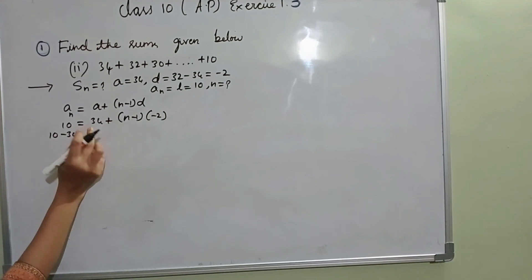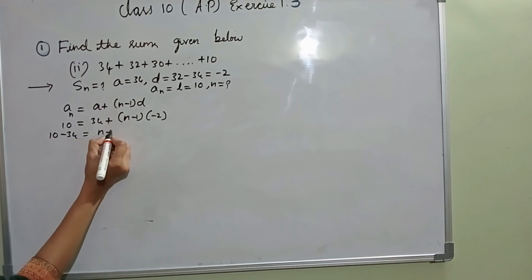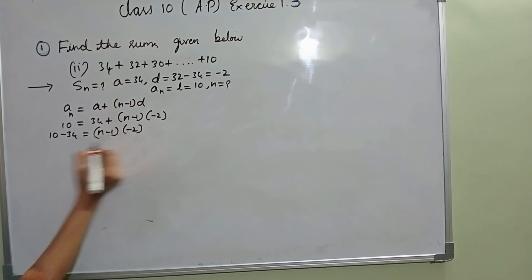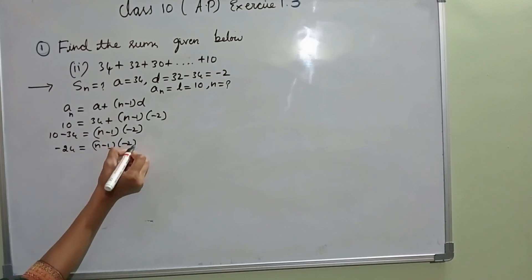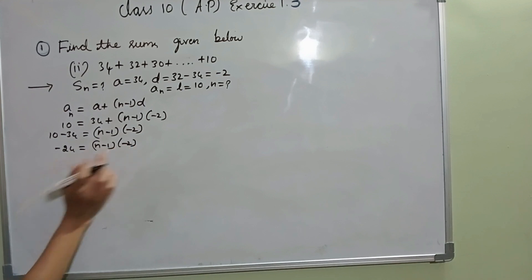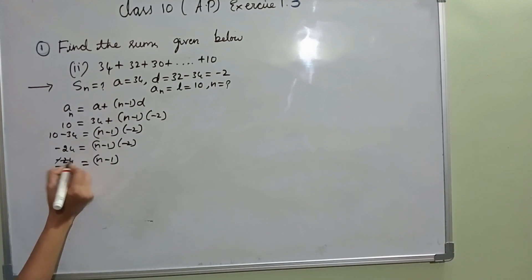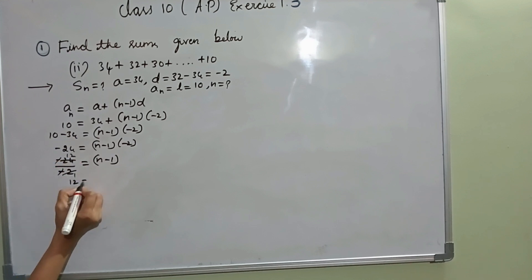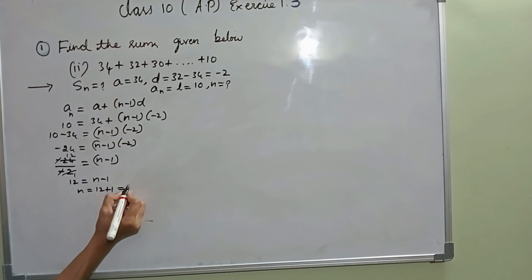10 minus 34 gives minus 24 equal to N minus 1 into minus 2. Transferring minus 2 to the other side becomes divided by. Minus minus get cancelled. 24 divided by 2 is 12, equal to N minus 1. So N equal to 12 plus 1, that is 13.